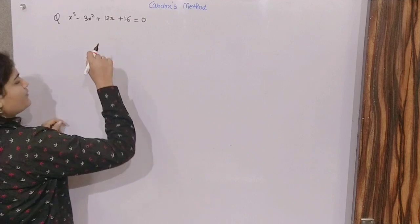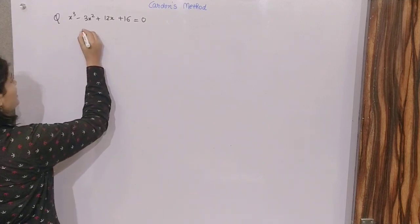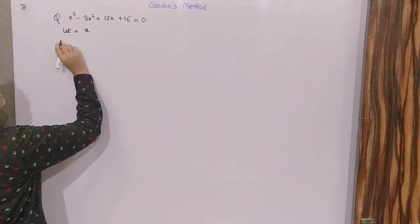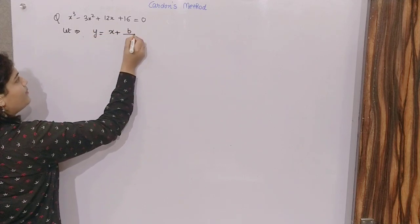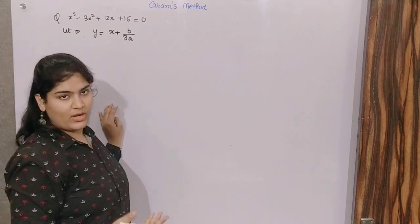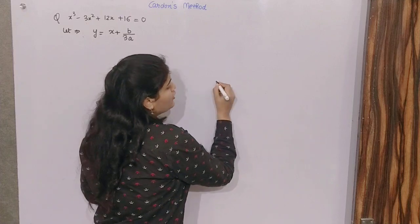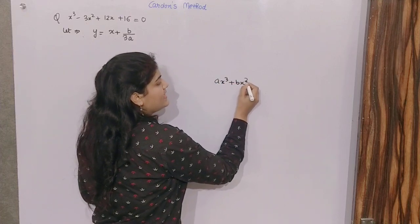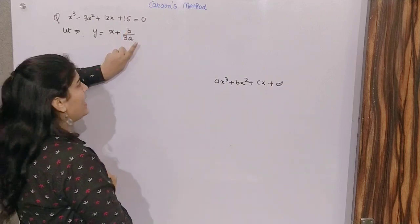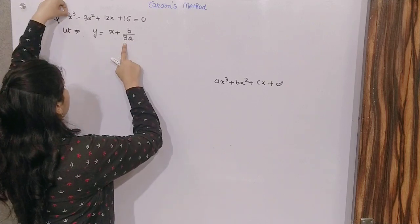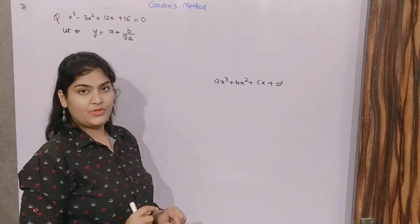So what you have to do — there is a single step which has been added into the previous one, which is you have to consider y as x plus b by 3a. The standard cubic form is this. Here b is the coefficient of x squared, divided by 3 — we take 3 because the highest power is 3 — and a is the coefficient of x cube.